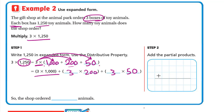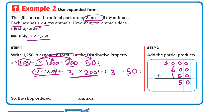3 times 1,000 is 3,000. Then 3 times 200: 3 times 2 is 6, and we write two zeros, so it's 600. And 3 times 50: 3 times 5 is 15, and we write one zero, so it's 150. Then we add: 0 plus 0 plus 0 is 0, 0 plus 0 plus 5 is 5, 0 plus 6 plus 1 is 7, and 3 plus nothing is 3. The answer is 3,750 animals.